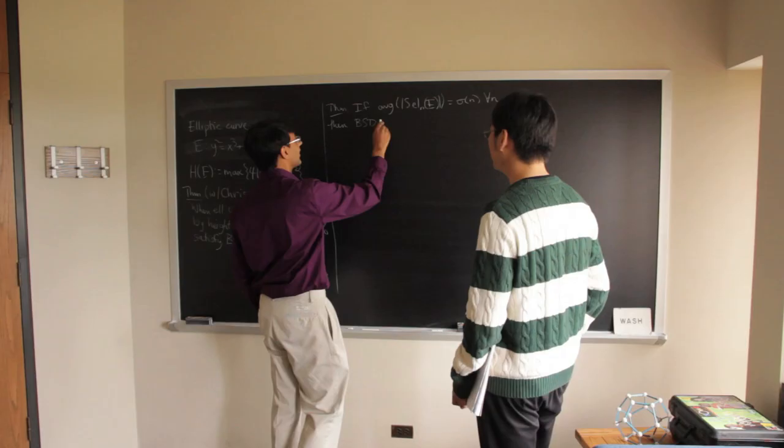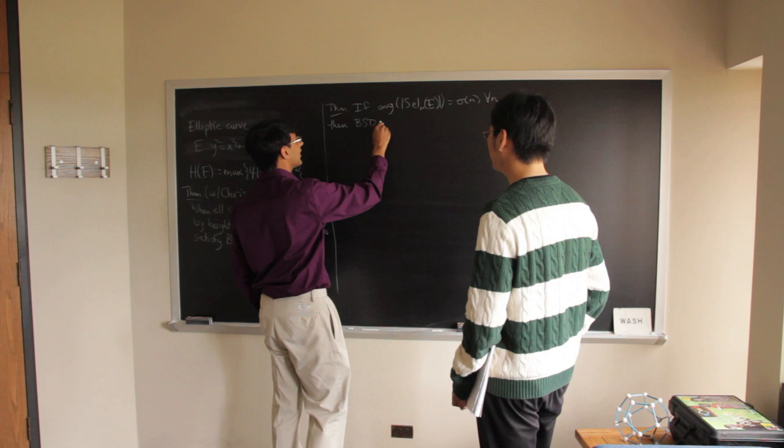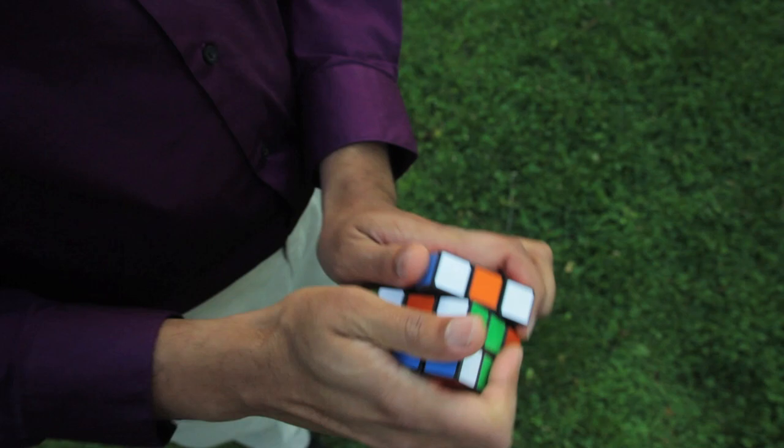At one moment it just clicked, it was around midnight when I usually go to sleep, that if I take a Rubik's cube and I cut off the top layer, and then I put numbers in the remaining little cubes, that that would lead to a cubic analog of Gauss composition.